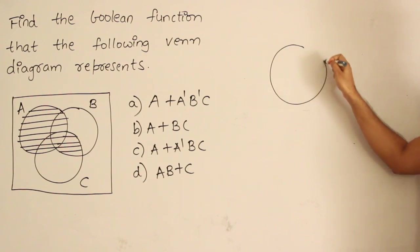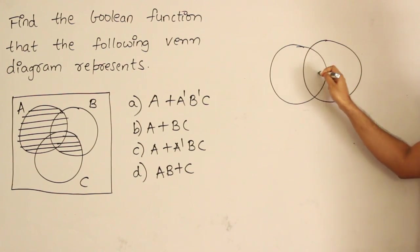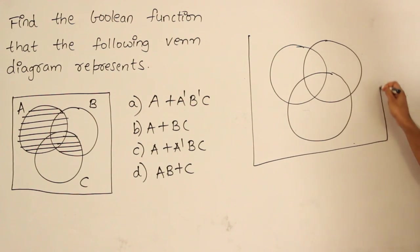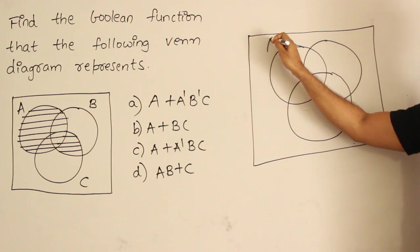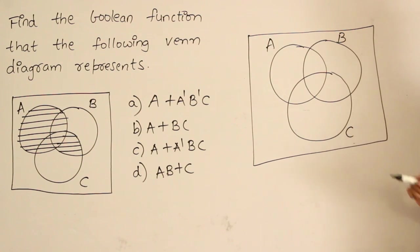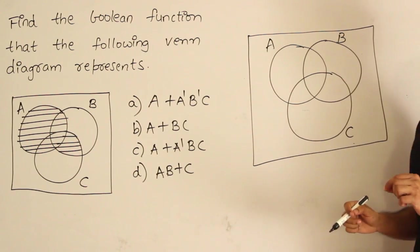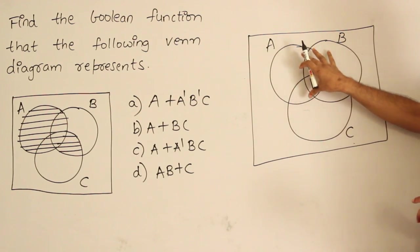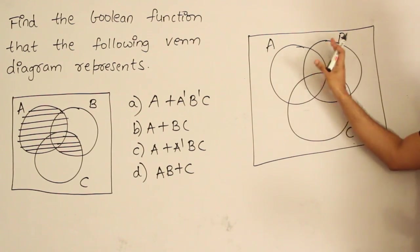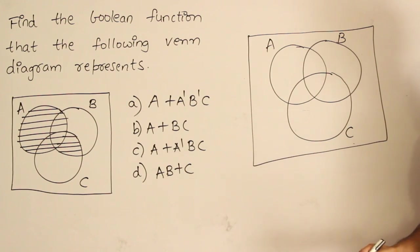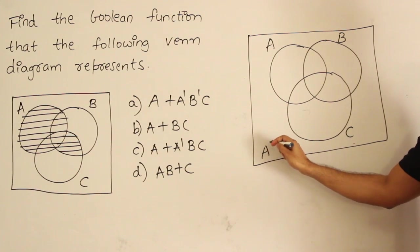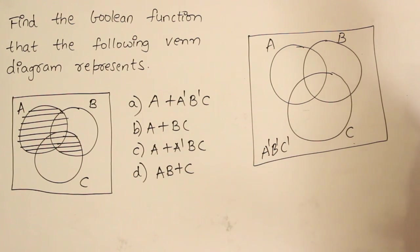If I have 3 variables, I can represent them in a Venn diagram like this. Say this is A, B, and C. Let's see what each area specifies. The area outside everything means nothing is present — no A, no B, no C — therefore it is represented as A prime, B prime, C prime.